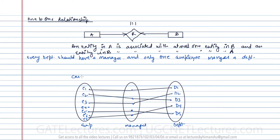The cardinality of employee is one — cardinality is the maximum number of relationships an entity can participate in. The participation of employee is zero — participation is the minimum number. Employees e1, e2, e3, e5 participate in maximum one relationship, while e4 and e6 are not participating in any. So minimum participation is zero and maximum cardinality is one.